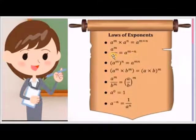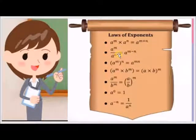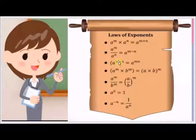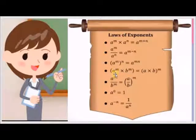The second law is a raised to the power m upon a raised to the power n is equal to a raised to the power m minus n. The next law is a raised to the power m by b raised to the power m is equal to a into b raised to the power m.